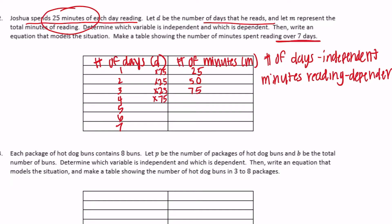Four days times twenty-five would be one hundred. Five times twenty-five is one hundred twenty-five. Six times twenty-five is one hundred fifty. And seven times twenty-five is one hundred seventy-five. What we did each time is take the number of days and multiply it by twenty-five. So the equation is 25d equals the total number of minutes — twenty-five times the number of days equals the total number of minutes.